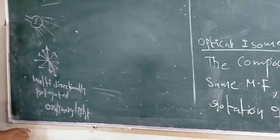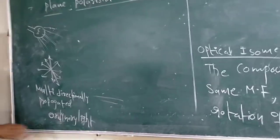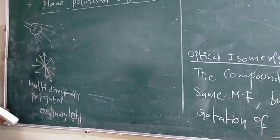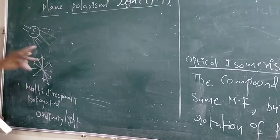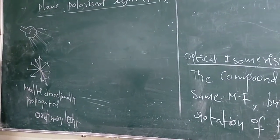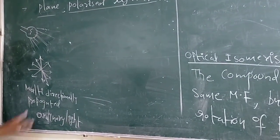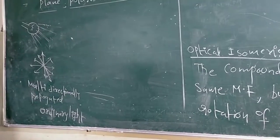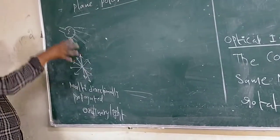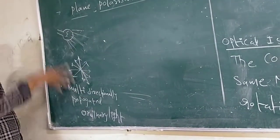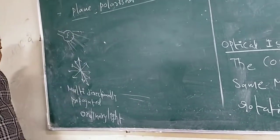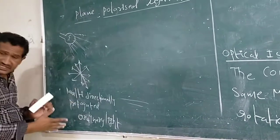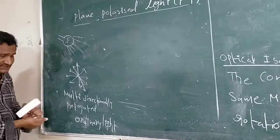This multidirectional ordinary light propagates in all directions. From an ordinary light source, this multidirectionally propagated light is emitted.